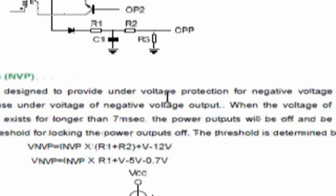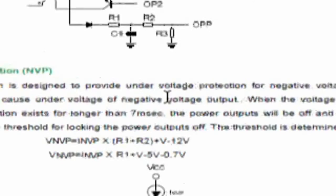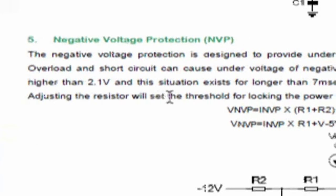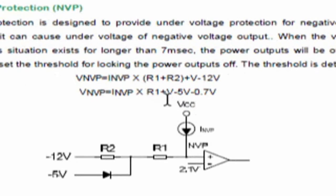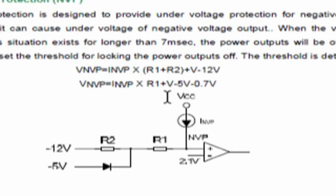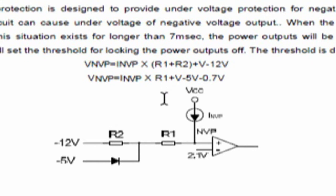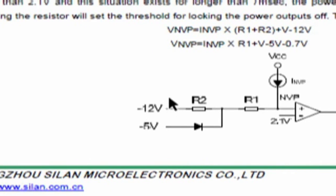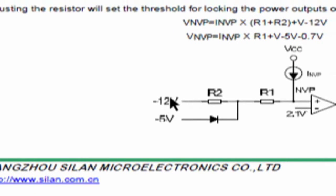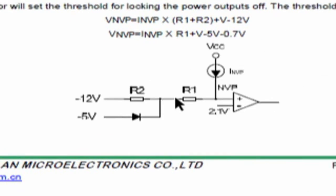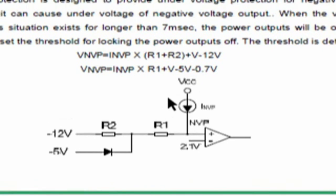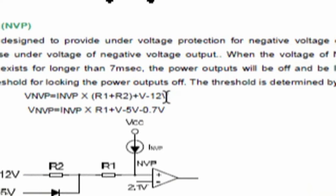It is designed to provide under-voltage protection for negative voltage output. Overload and short circuit can cause under-voltage of negative voltage output. When the voltage of NVP is higher than 2.1 volts, blah blah blah. So the thing is, I won't be using this power supply with a computer. I won't be bothered about the voltage of minus 12 volts, because anyway it supplies just some 500 milliamps at max, and I don't need that for my projects. So what I'll do is clip the minus 12 volt output from the circuit and try to bypass this protection.